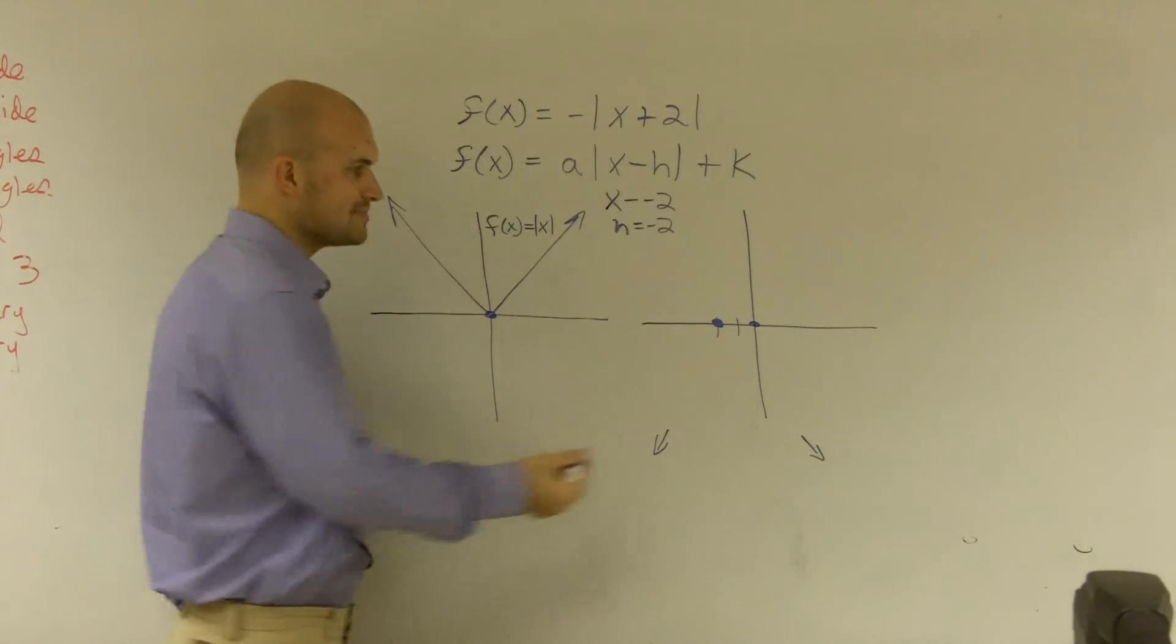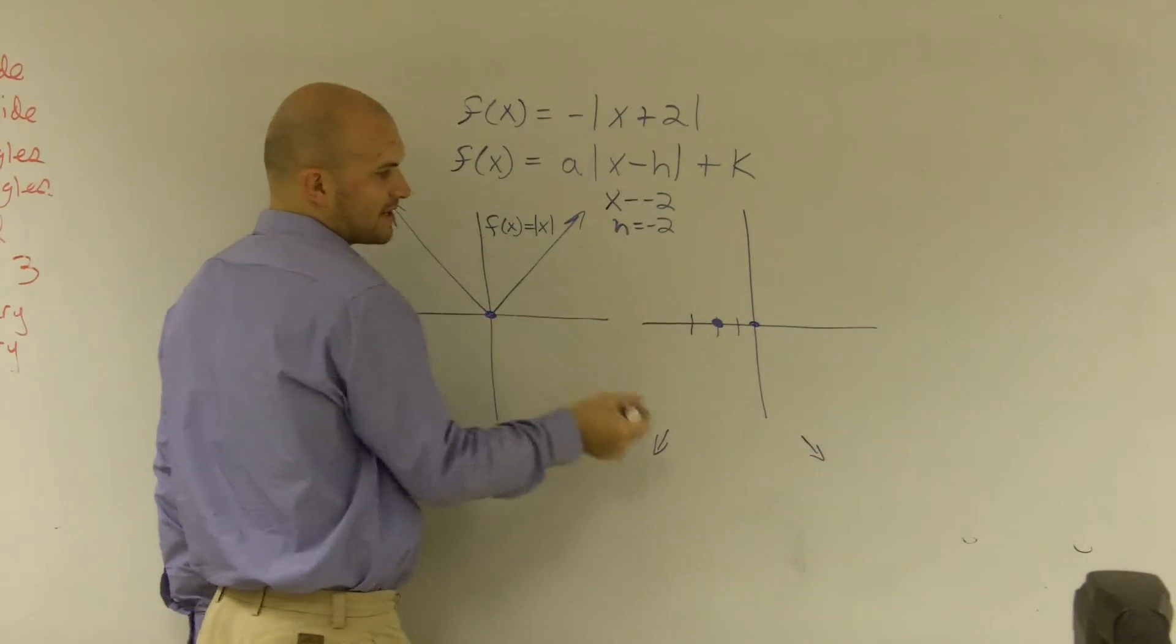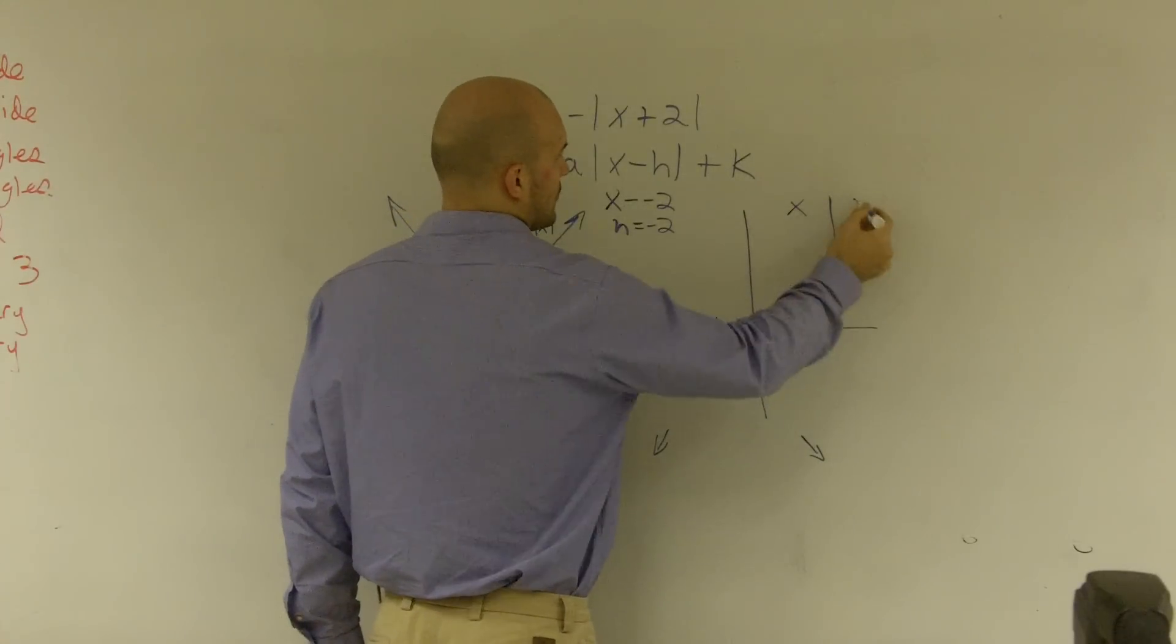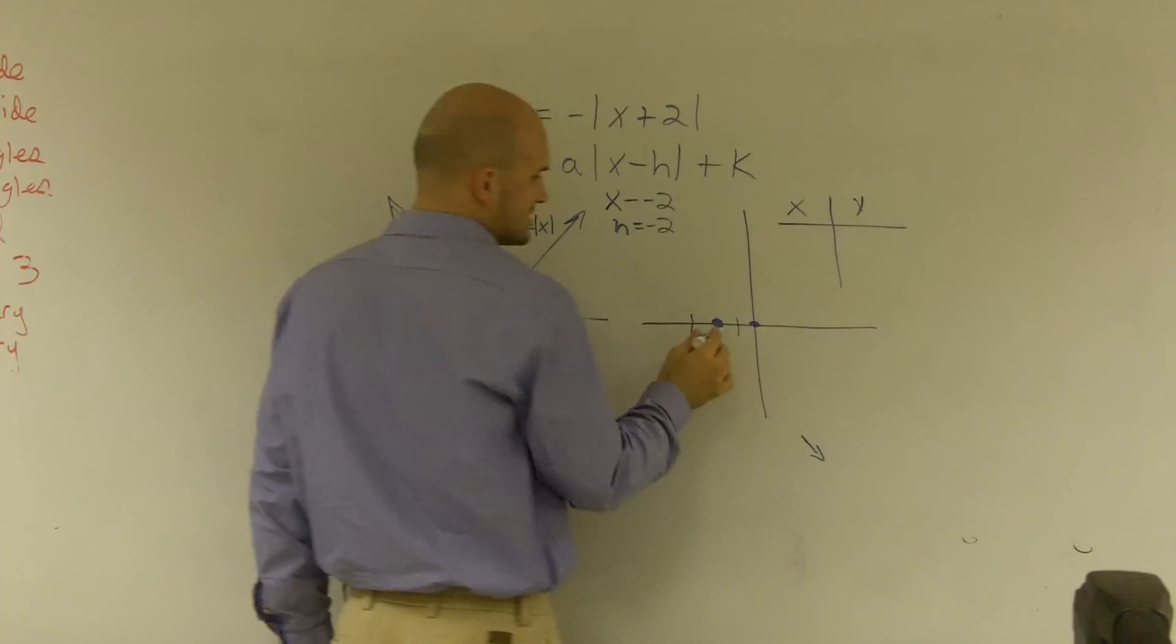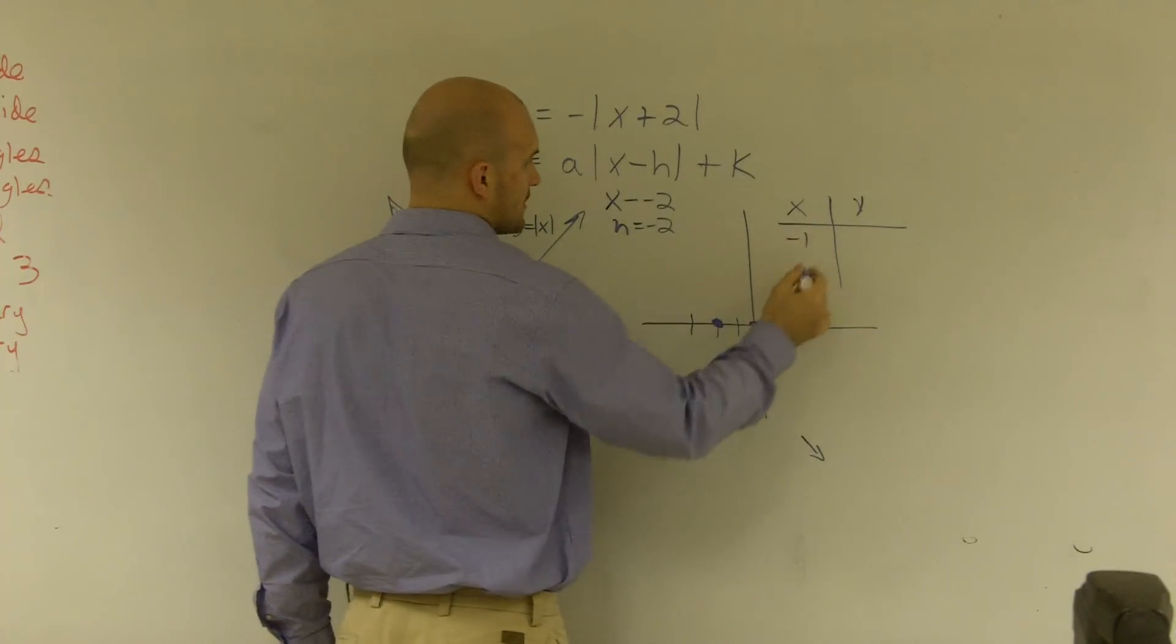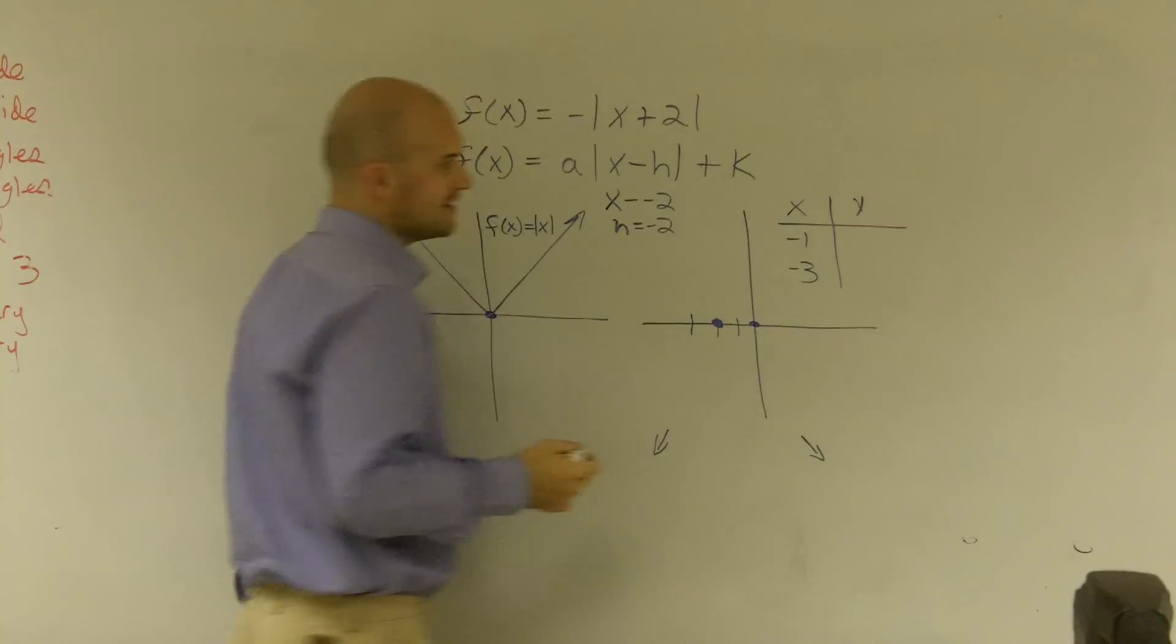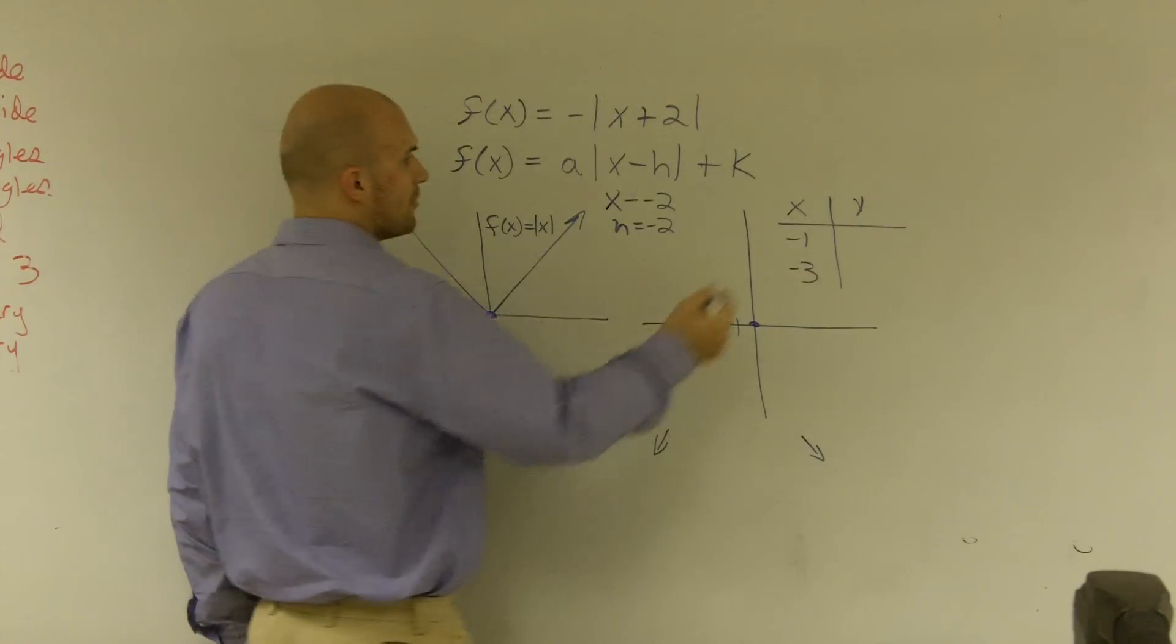So to find some exact points, let's pick a point to the left and a point to the right of our vertex. So let's say x, y, let's say x = -1 and x = -3.